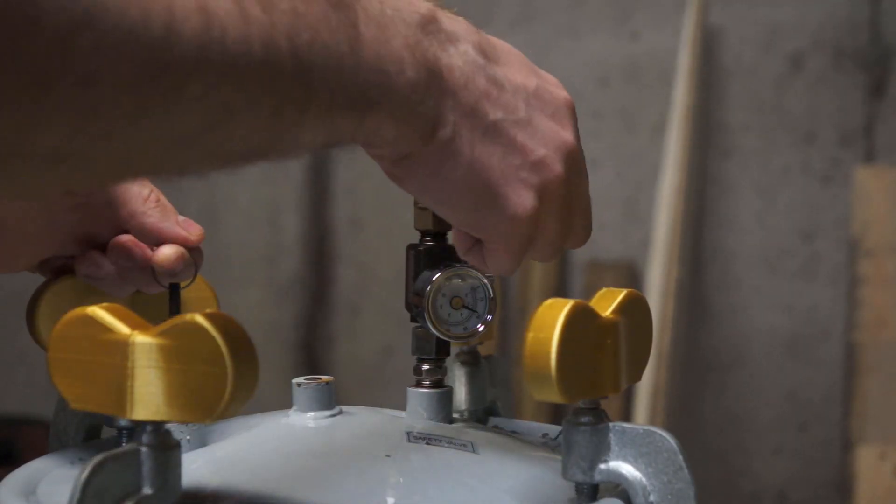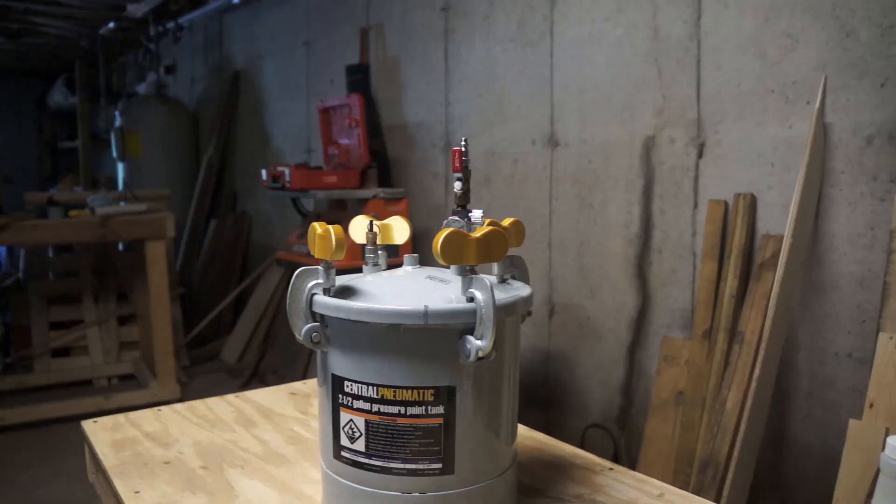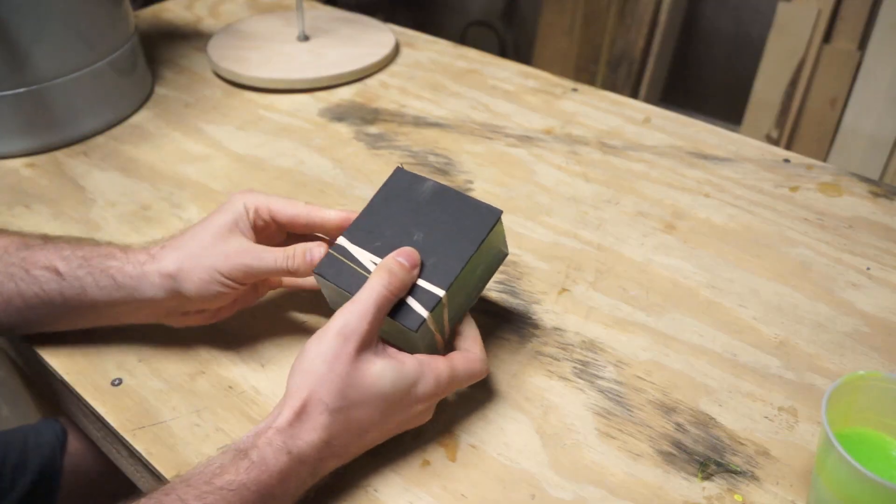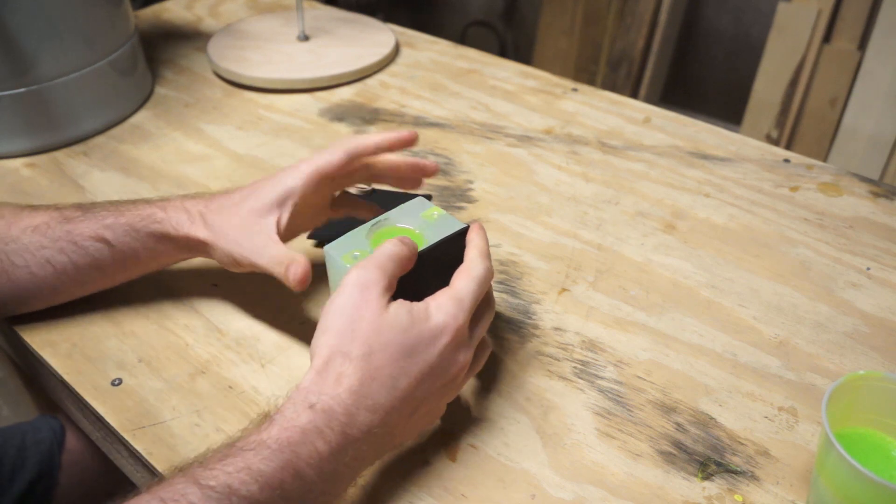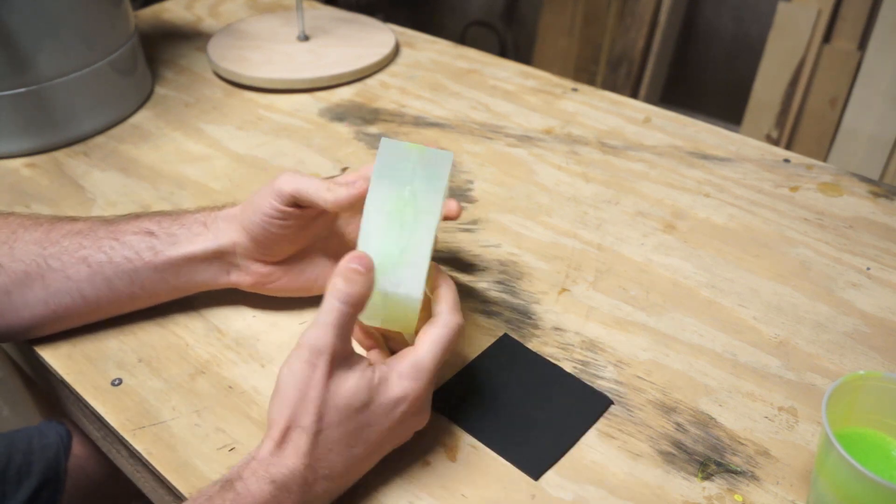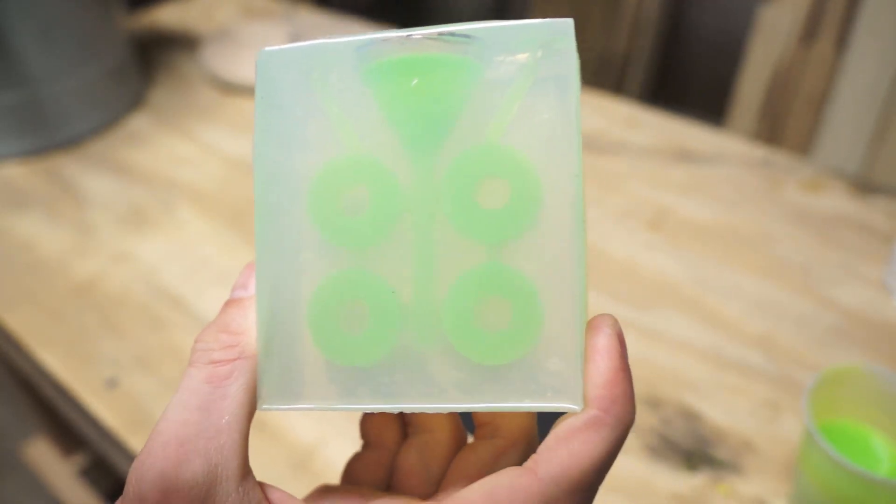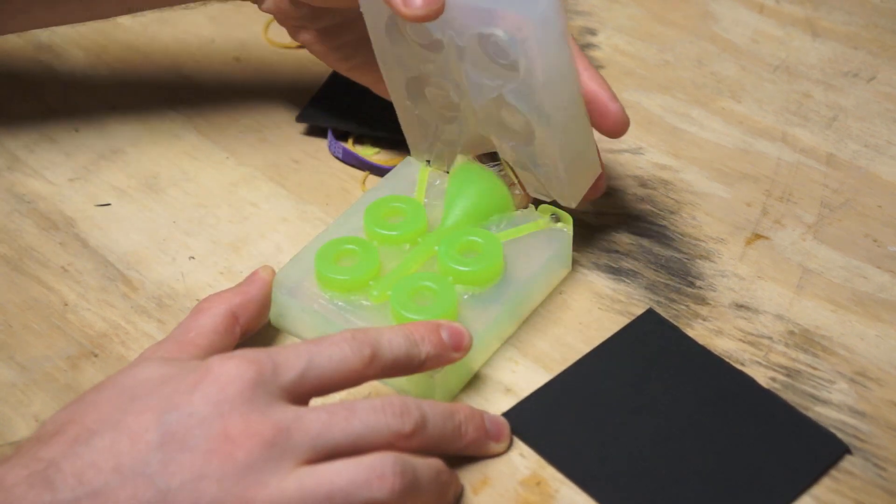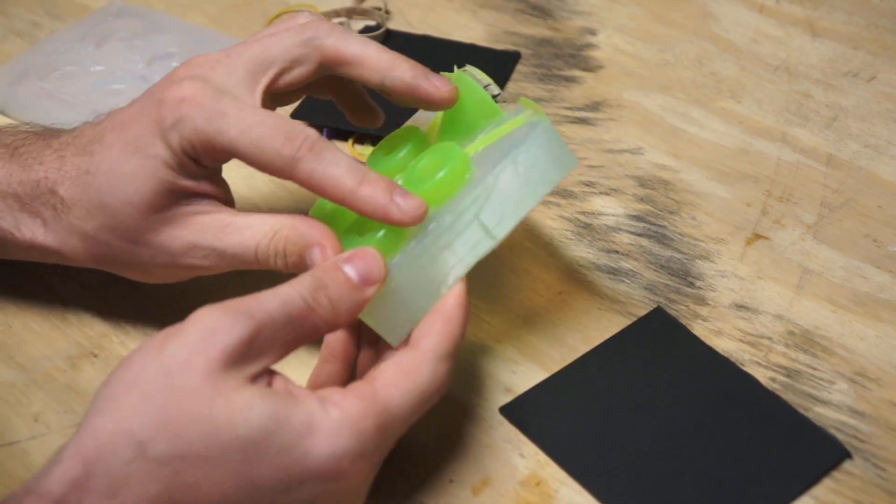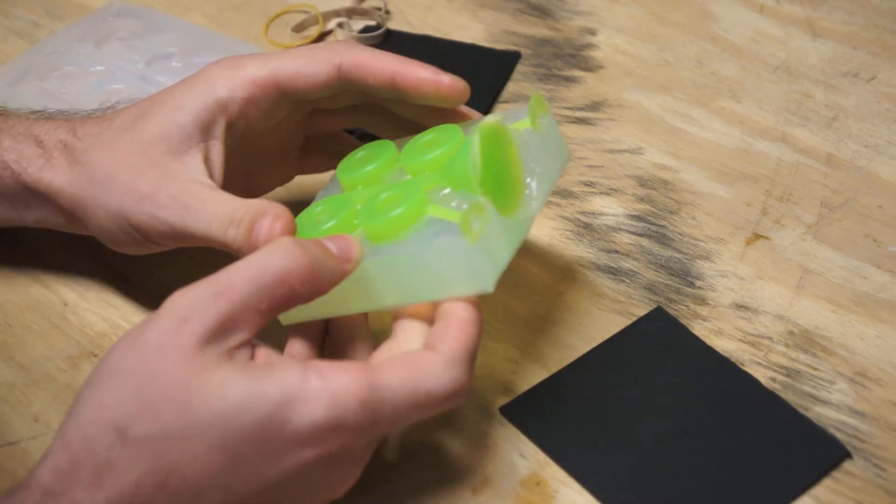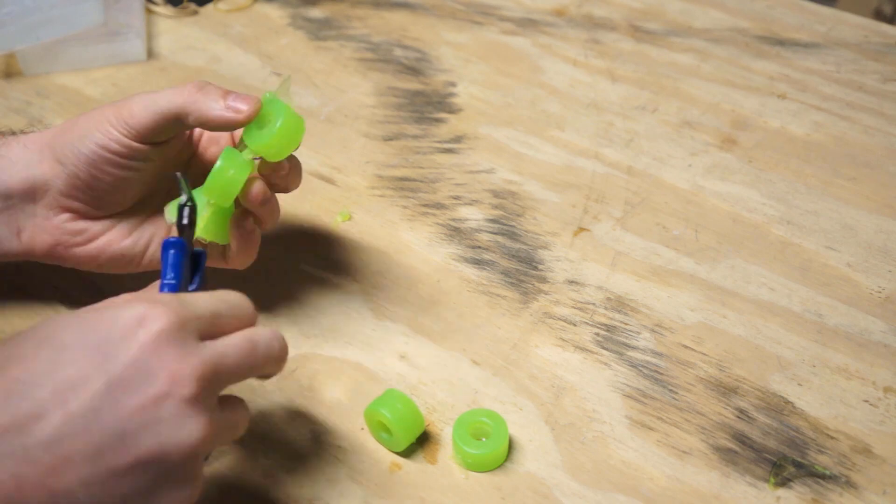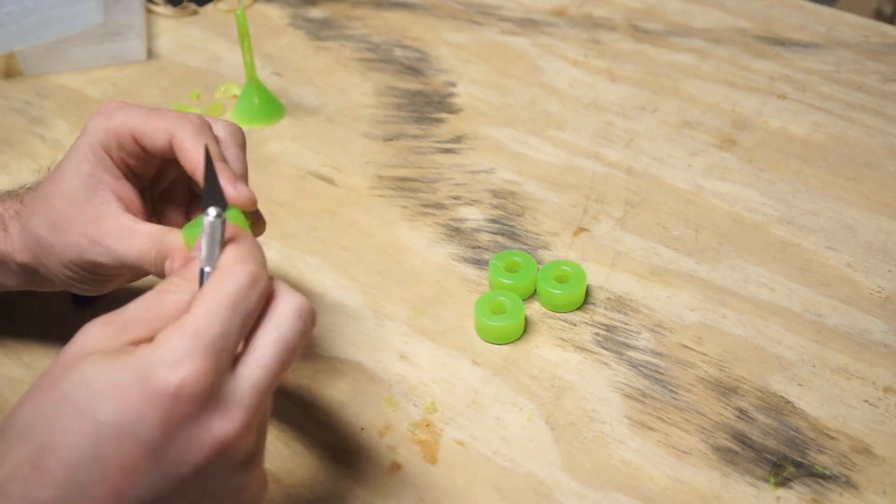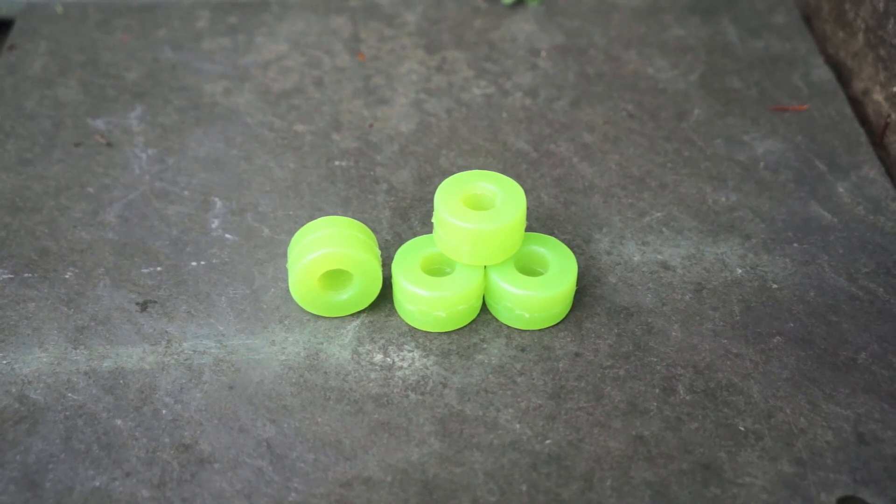A couple hours later I depressurized the pot and cracked it open. Oh that looks so cool. Look at him. Sweet! I pulled the mold apart and oh my god they're perfect. All that's left is to cut the bushings free of the sprues and runners and clean up some flashing. And look at that. Perfect bubble free castings.